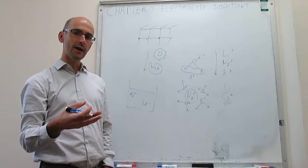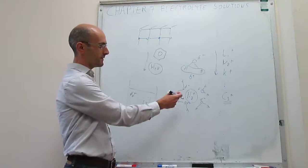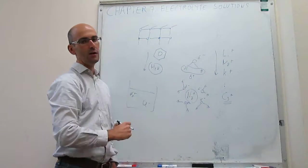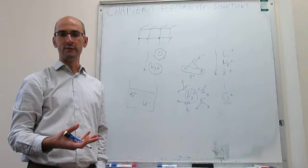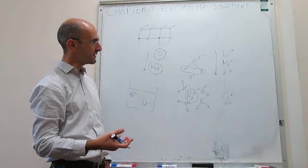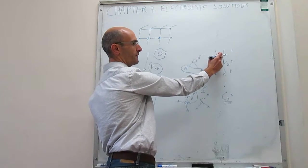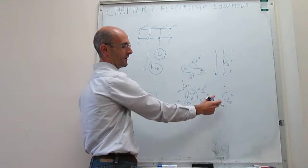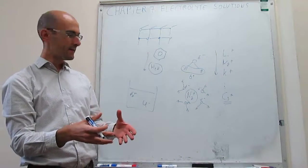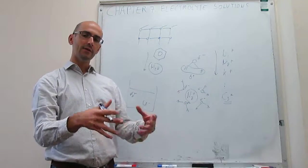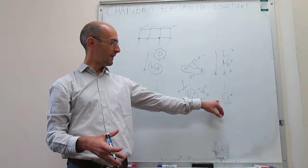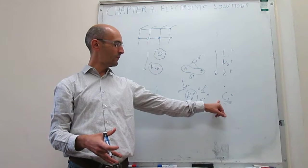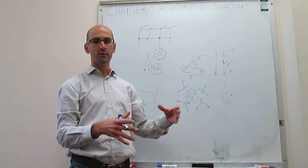Instead, you have to consider the ion surrounded by this hydration shell of solvent molecules. So what it turns out is that the hydration shell for lithium is actually much greater than that for caesium, so that when you add the size of the ion and the hydration shell, those two components will give an overall smaller size, and that means greater mobility for caesium.